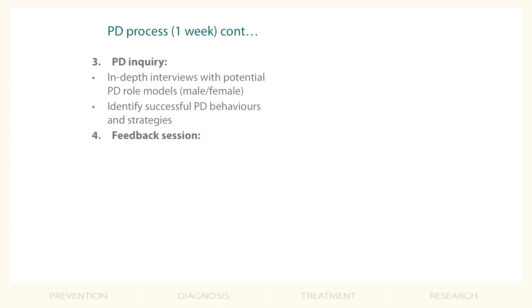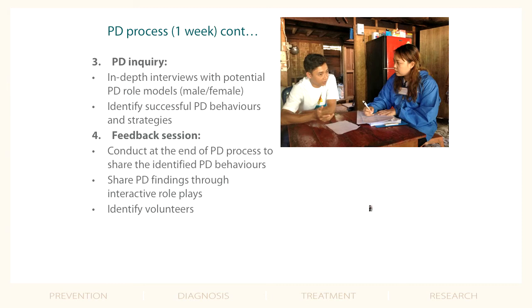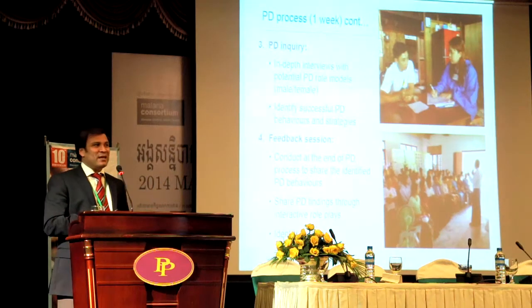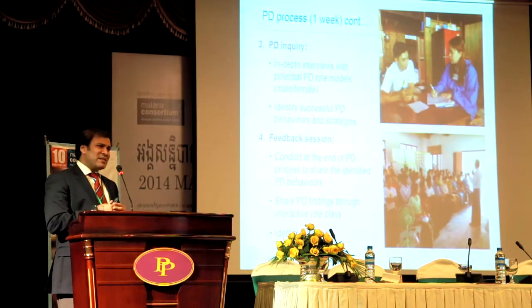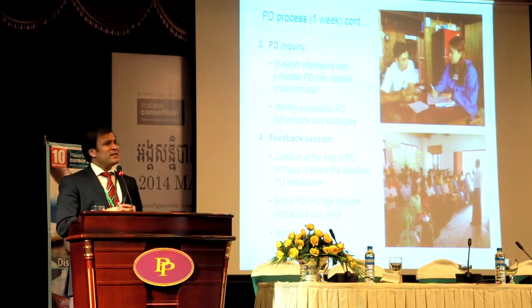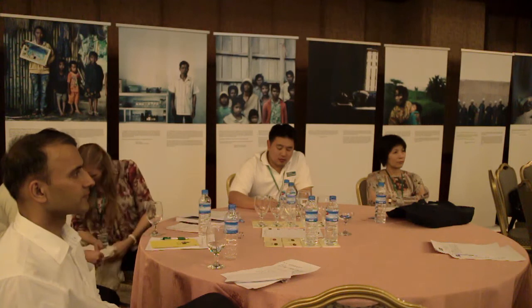We meet with the community at the beginning, tell them we will find a solution, and ask them to come back after seven days when we will share the solution with them. There is huge interest because they have been working with us throughout the process. We then invite them again and share the identified behaviors through role plays in a very interactive way. We also bring the real role models — the positive deviants — and they tell their stories. We ask: can we adopt these behaviors, can we follow them? And they say yes, because these behaviors are from the community — they are simple, local, doable, and accessible. So there is a big commitment.